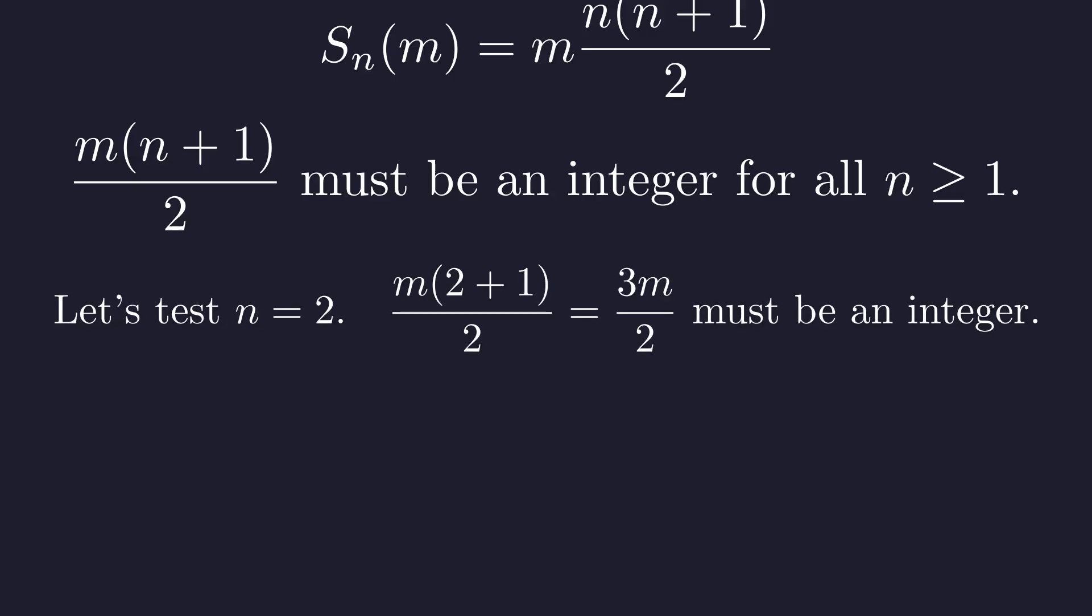Since the condition must hold for all n, it must hold for the even values. The simplest even number to test is n equals 2. For 3m over 2 to be an integer, the factor of 2 in the denominator must be cancelled. This forces m to be even.